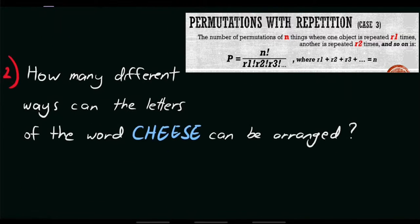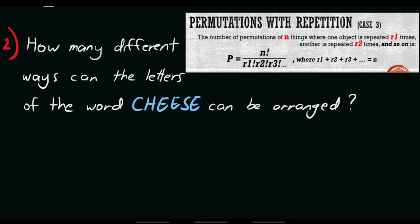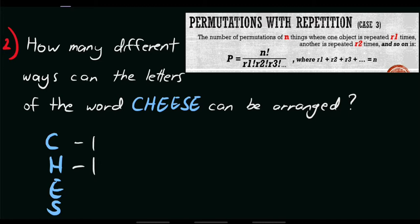For problem number 2: how many different ways can the letters of the word CHEESE be arranged? Same procedure — first count the number of letters. We have C-H-E-E-S-E, which is 6 letters. Let's list them: C, H, E, and S. C appears 1 time, H appears 1 time, E appears 3 times, and S appears 1 time.